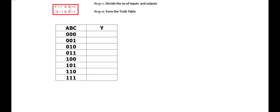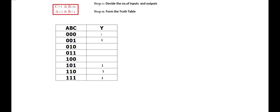In the truth table, wherever B equals zero and C equals one, we place output Y equals one. We get that combination in two rows. For A equals one and B equals one, we get Y equals one in those rows as well — giving us output ones at minterms 1, 5, 6, and 7. The remaining combinations have output zero, so we fill those accordingly.